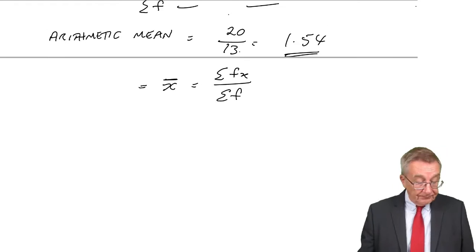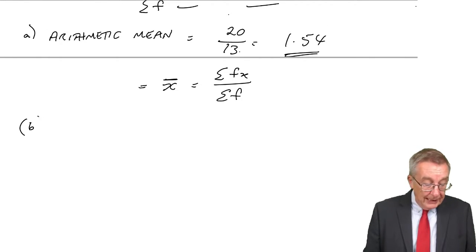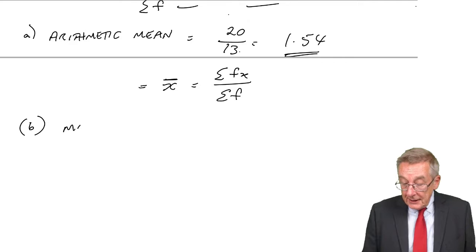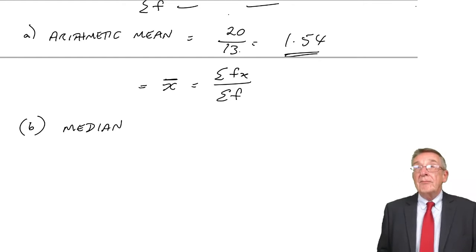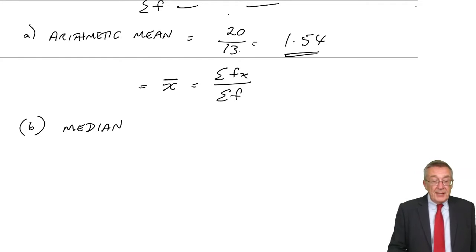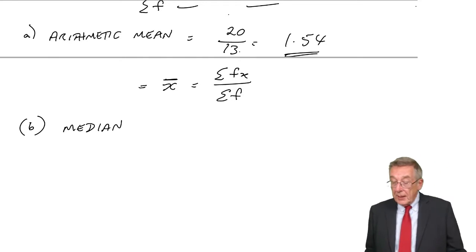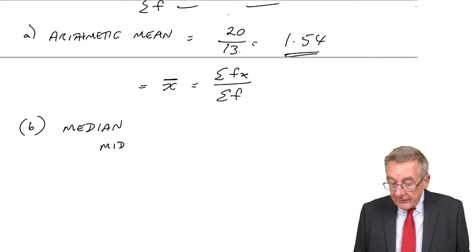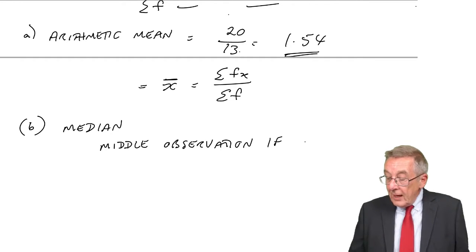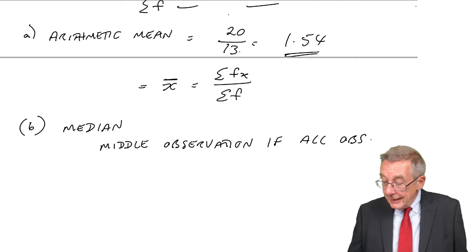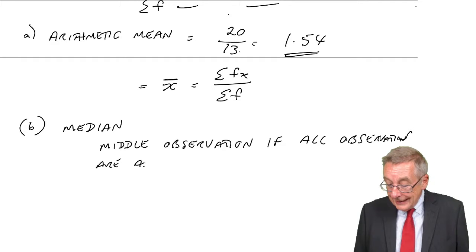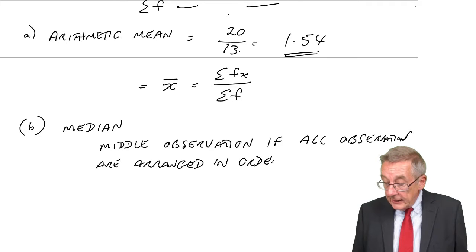So the second measure that you can be asked is the median. And what the median is — you don't need to copy down what I'm doing — but it is the middle observation if all observations are arranged in order of magnitude.